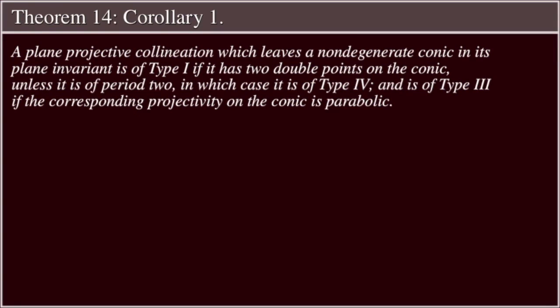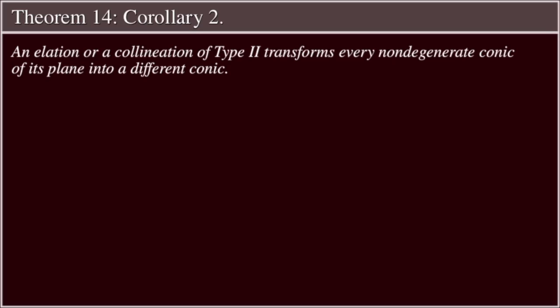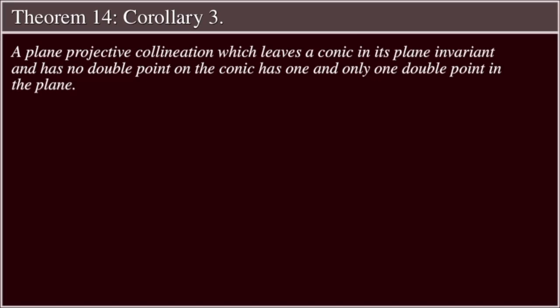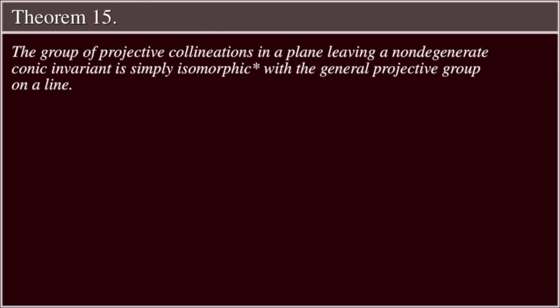Corollary 1: A plane projective collineation which leaves a non-degenerate conic in its plane invariant is of type 1 if it has two double points on the conic, unless it is of period 2, in which case it is of type 4; and is of type 3 if the corresponding projectivity on the conic is parabolic. Corollary 2: An elation or a collineation of type 2 transforms every non-degenerate conic of its plane into a different conic. Corollary 3: A plane projective collineation which leaves a conic in its plane invariant and has no double points on the conic has one and only one double point in the plane. Theorem 15: The group of projective collineations in a plane leaving a non-degenerate conic invariant is simply isomorphic with the general projective group on a line.